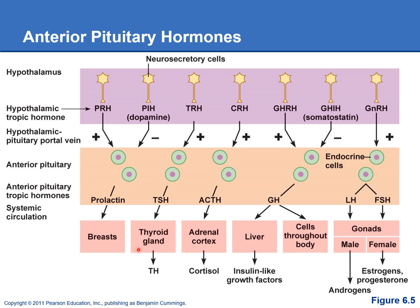Some of these anterior pituitary hormones are tropic hormones, meaning they will travel to another endocrine gland. For example, TSH will travel to the thyroid gland and tell it to release thyroid hormones. But prolactin is not tropic — it travels to the mammary gland and does not tell it to release any hormone; it just tells the mammary gland to make milk.